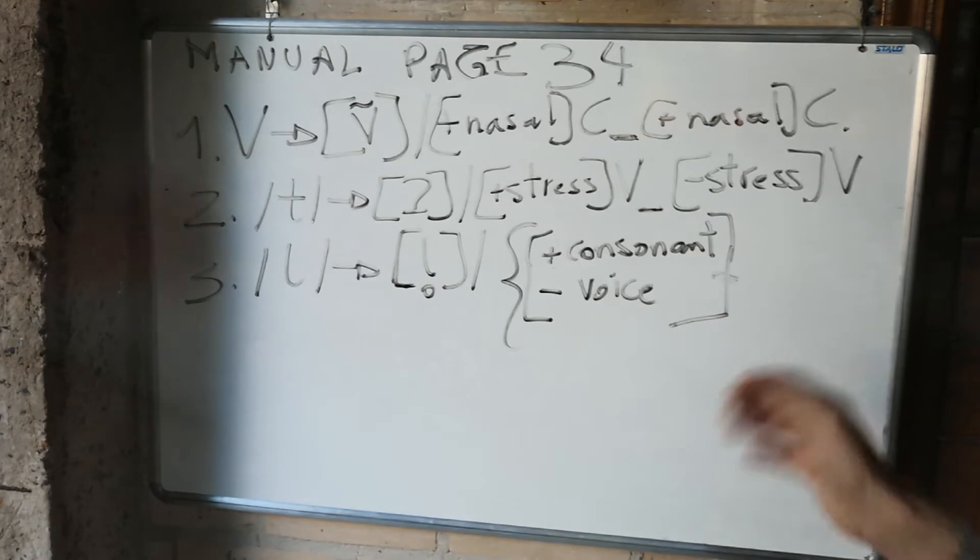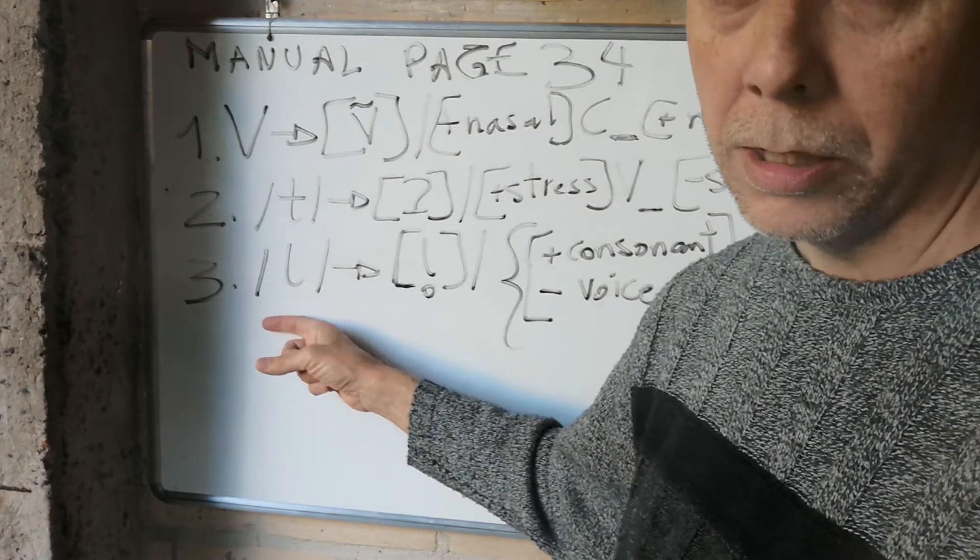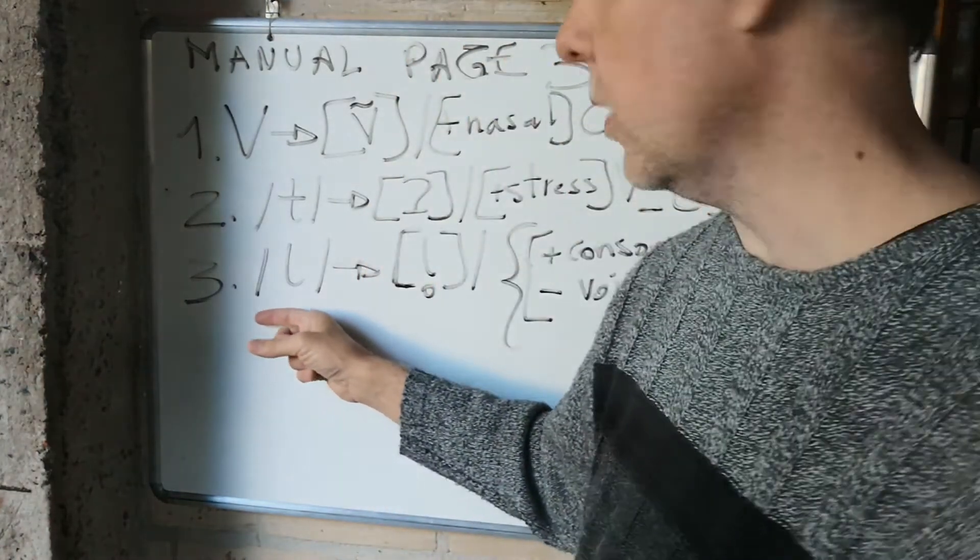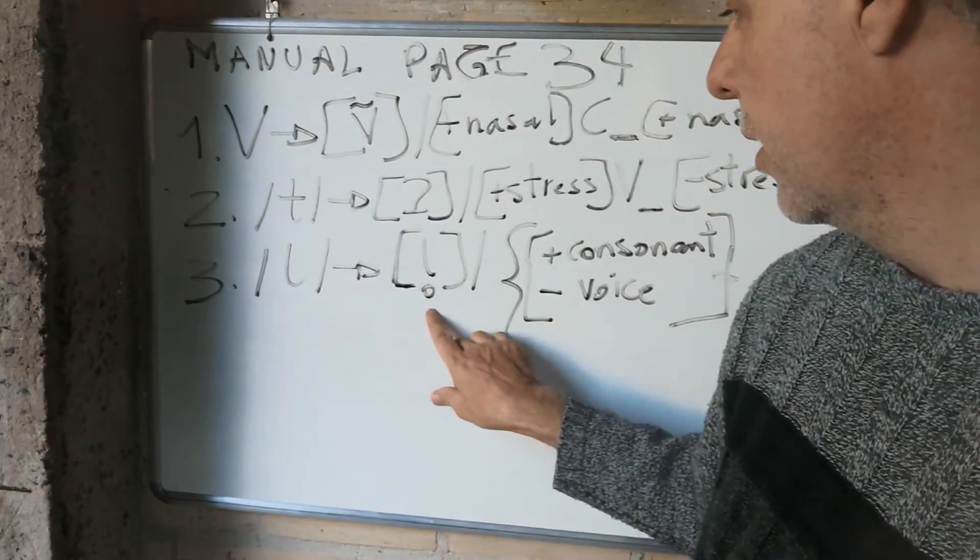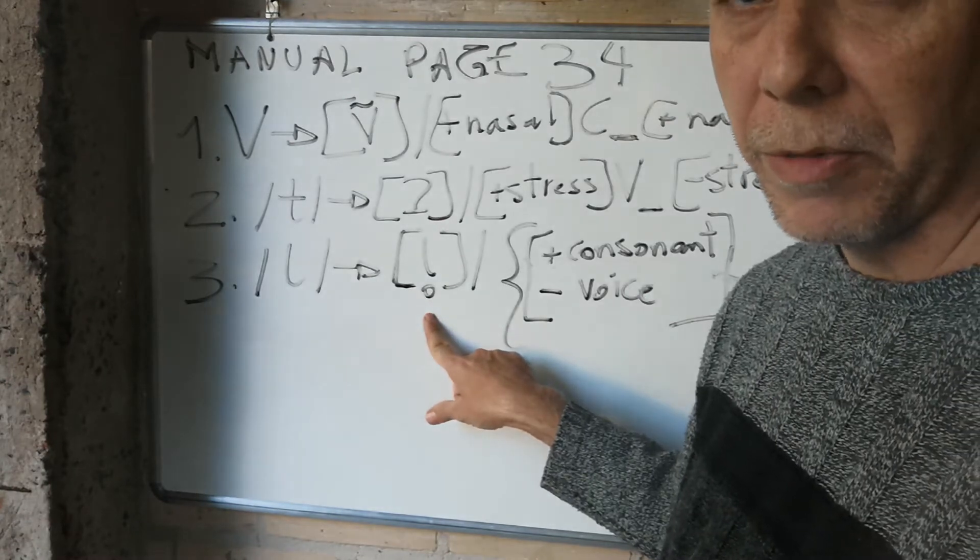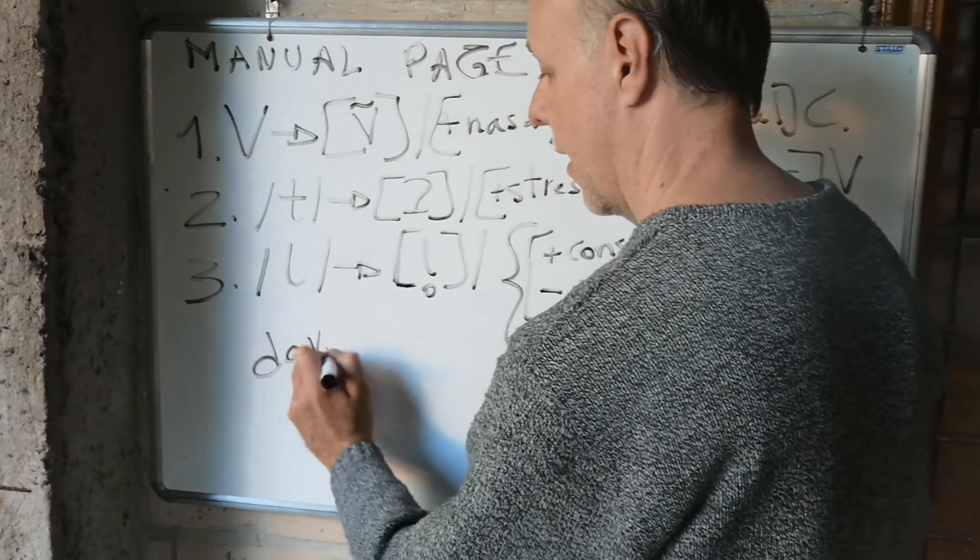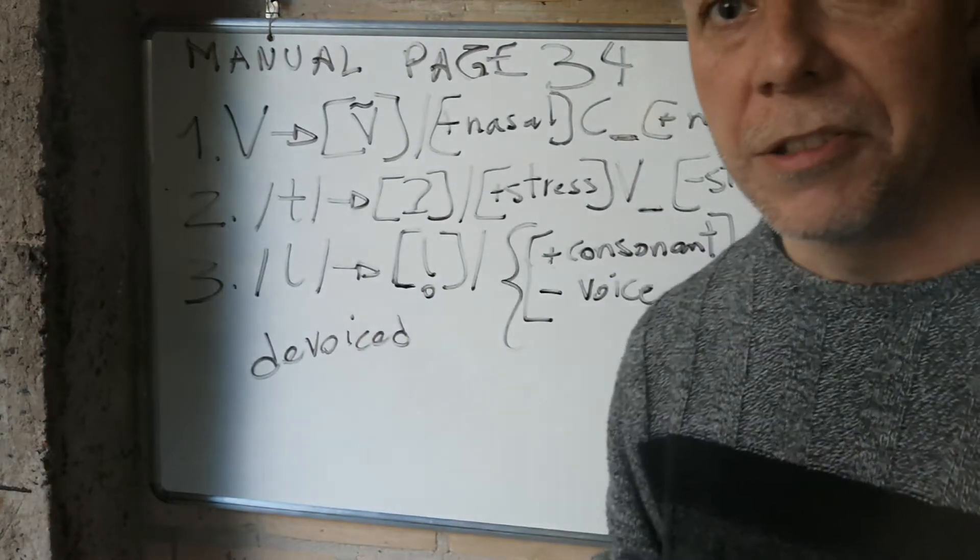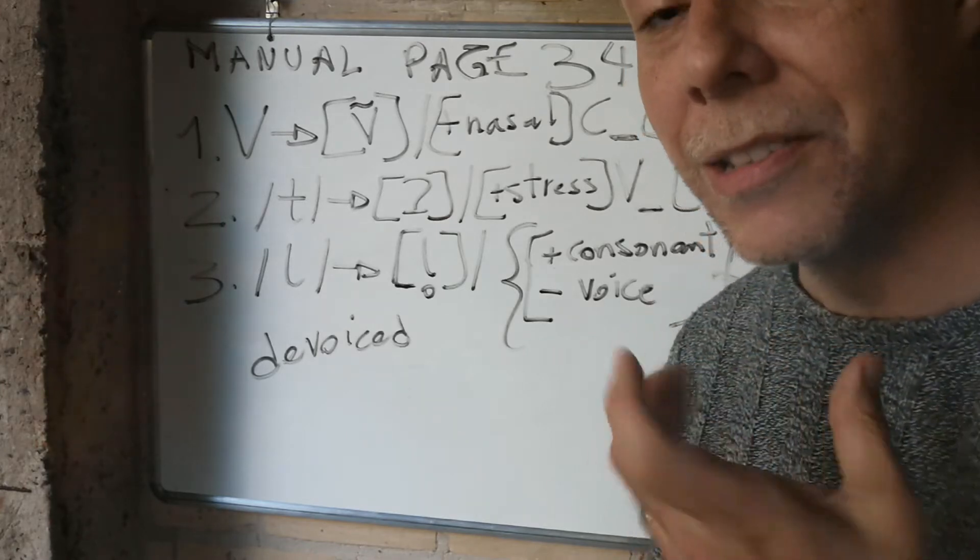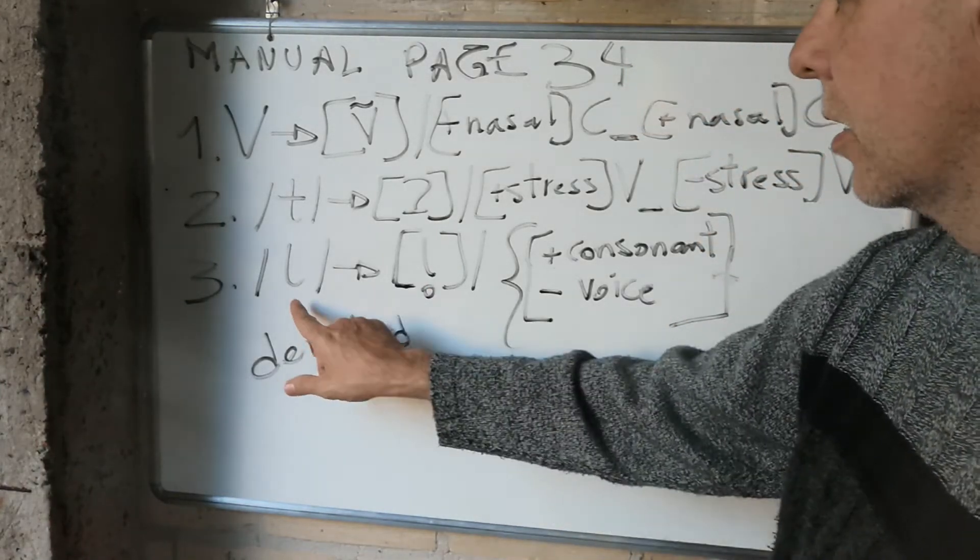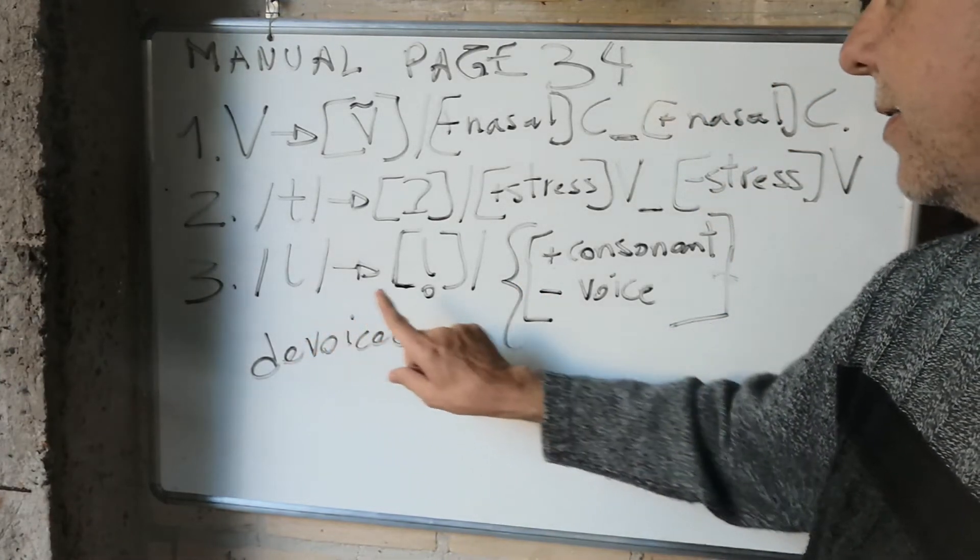This is number three. I can say the sound L, or the phoneme L, or the voiced alveolar liquid sound, becomes - this is a new symbol you've never seen before - devoiced. So instead of pronouncing it one way, they say it without voice. It's devoiced. Never mind, it's not an English or Spanish rule. So this sound becomes devoiced in which phonological environment?